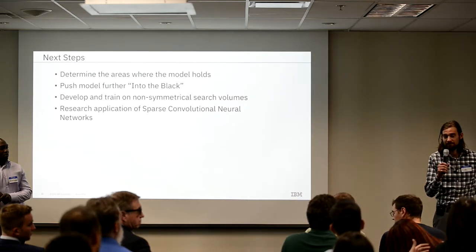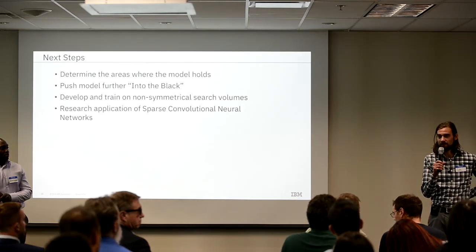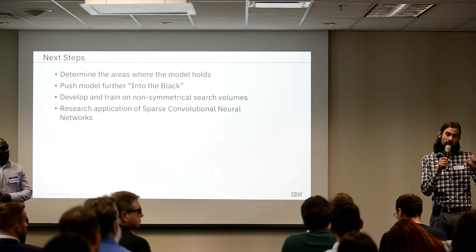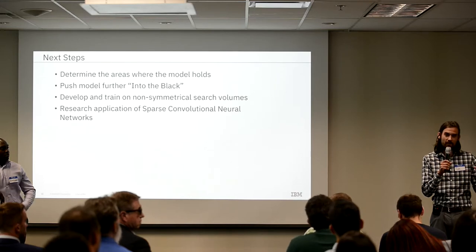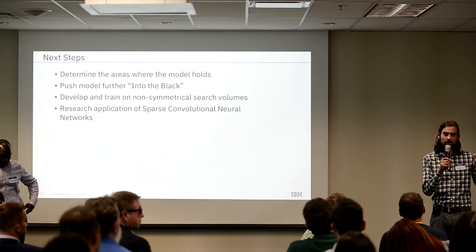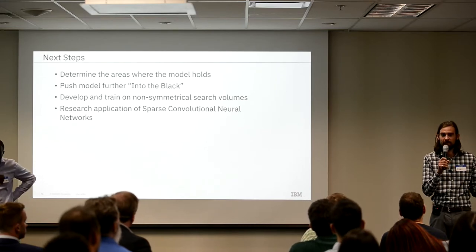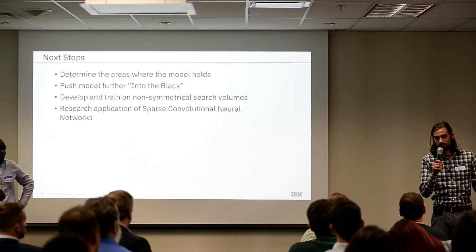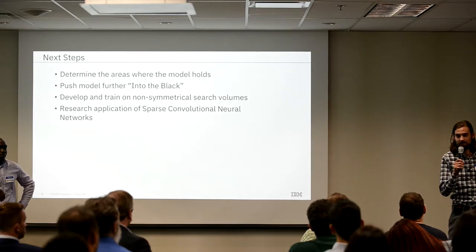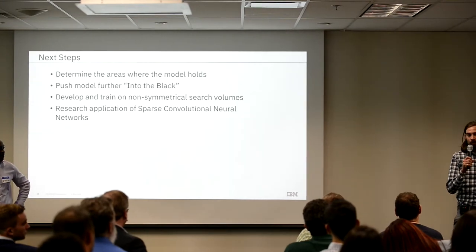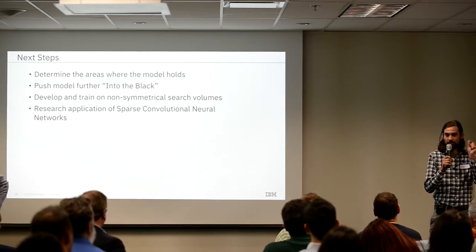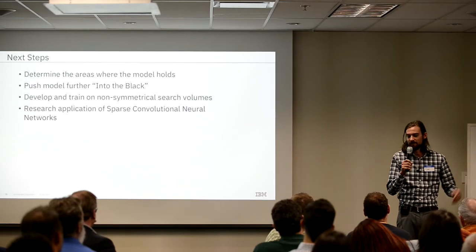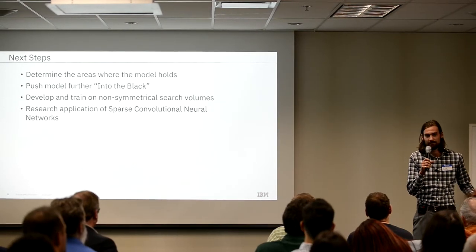Q: What are the dimensions of the cube? A: The ones we're running today are 30 by 30 by 30. If you're not smart about how you encode the geo variables, the feature vector is 600 to 700. At four megabytes per geo variable, it grows really, really fast.